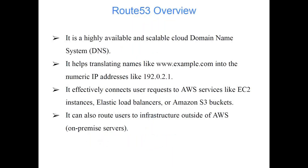Let's start with the first topic: the overview. Route 53 is a highly available and scalable cloud Domain Name System. Whenever we access any website — suppose you are accessing gmail.com — behind that domain name there is definitely one IP address. But an IP address is like a 12-digit number, three digits, dot, three digits, dot, three digits, dot, three digits. It's very difficult to remember that number, and it's not just one website — if you're accessing 10 websites a day, remembering 10 IP addresses is very difficult and error-prone.